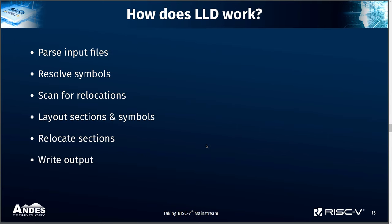To start, let's take a high-level overview of how LLD works. LLD has to parse the input files and add the symbols in these files into a symbol table, and also resolve any undefined symbols. Next, it scans for relocations in each section to determine if it needs to generate things like the global offset table or dynamic relocations. Then it lays out each section and computes the address of the symbols. It uses this layout to perform relocations on the input sections. Finally, it writes out the executable to the output file.